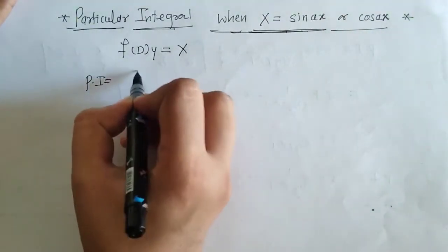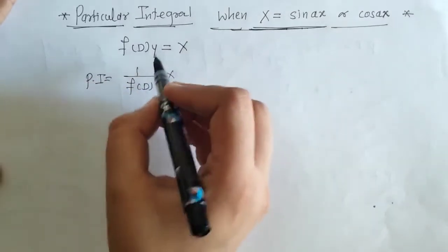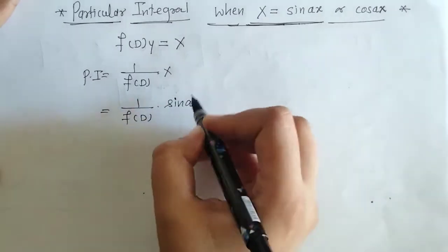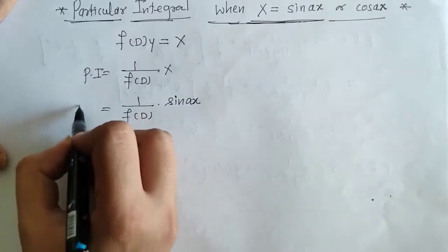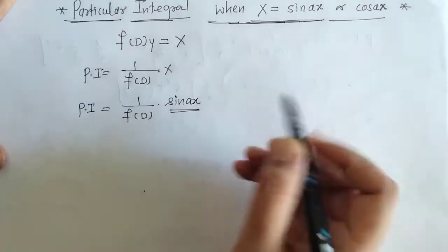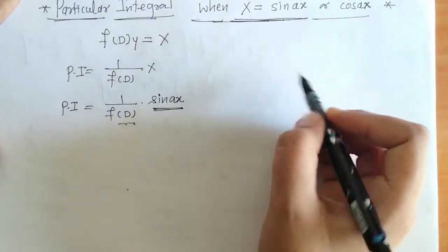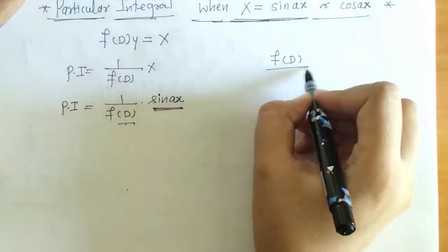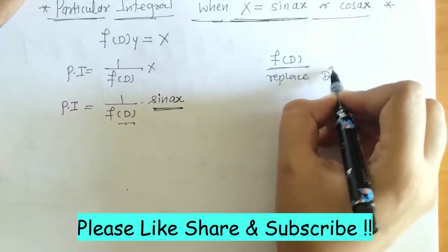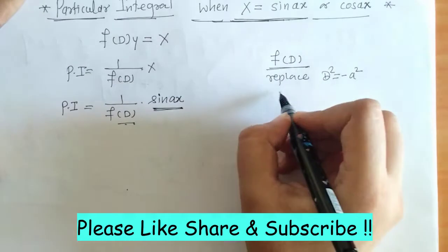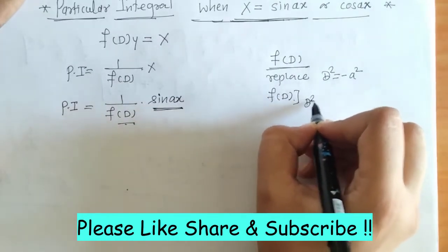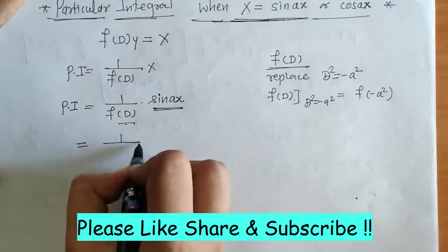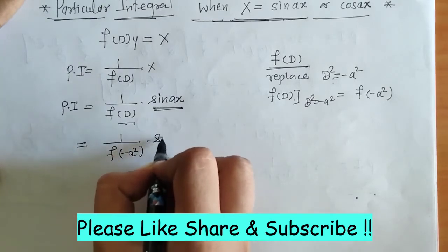We know that PI is given by this formula. For finding PI, we will write X as sin(ax) or cos(ax). Here a is a constant. We have to operate f(D) on this sin(ax). What we have to do is: since f(D) is a function of D, there may be terms of D, D² and so on. We have to replace D² equals to minus a², so that we get f(-a²). By replacing this, we get f(-a²) in the denominator, and we write sin(ax) in the numerator.